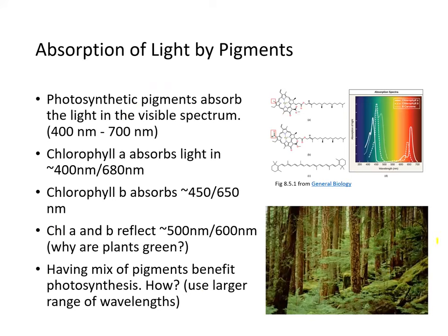The photosynthetic pigments involved in this process absorb only a certain spectrum of light, between 400 and 700 nanometers. Chlorophyll A absorbs at about 400nm and 680nm. Chlorophyll B absorbs at about 450 and 650nm. Combined, both chlorophyll A and B reflect 500–600 nanometers, which is the green region — and that's why plants are green. Having this mix of pigments benefits the plant because it uses a wider range of wavelengths.